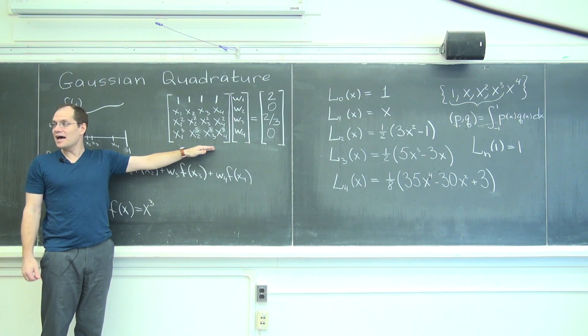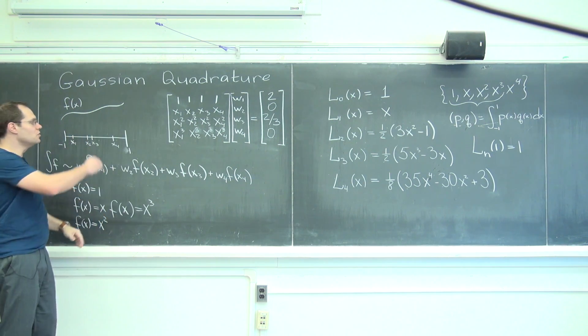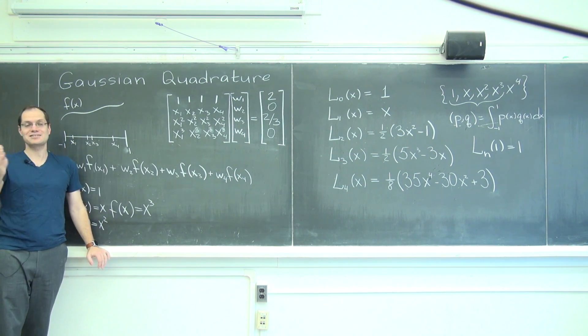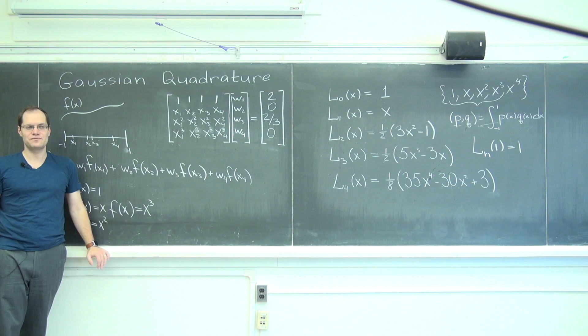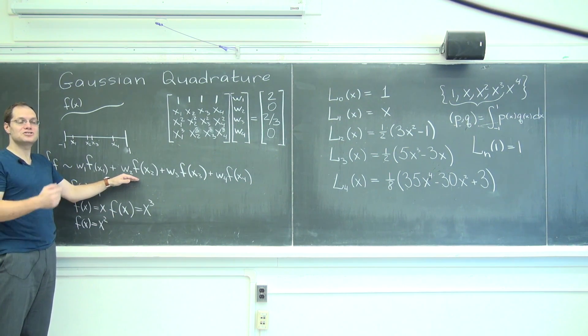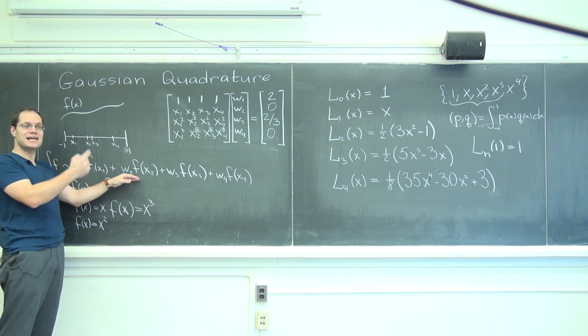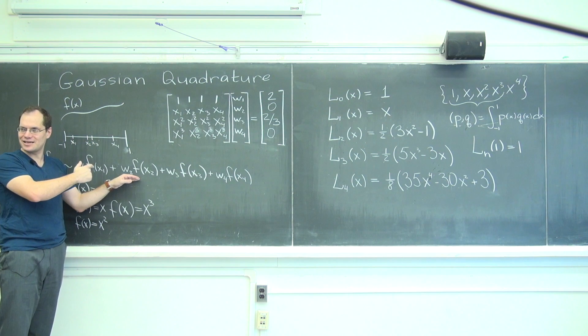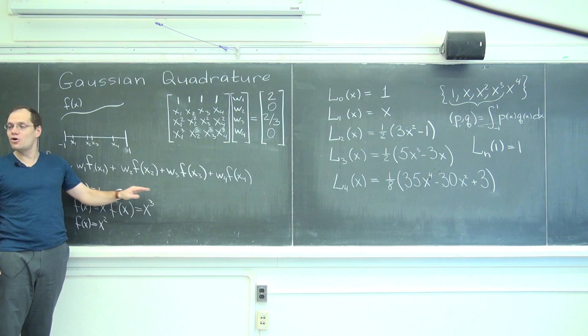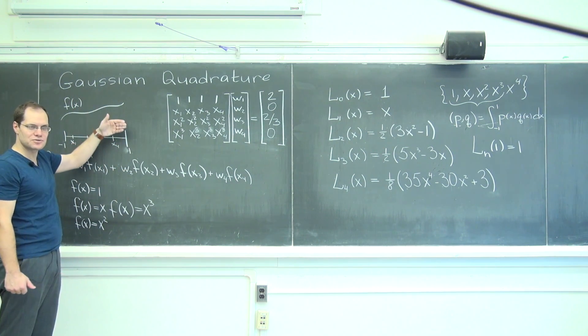Because the trapezoid rule only gets linear functions exactly, and this function gets up to cubic powers exactly. And if you think of a function like this, that's not a cubic, and you fit it with the best possible cubic in some sense that we'll actually talk about in not so distant future, then it will - then this scheme will actually give you the integral of that approximate function, because it integrates that approximate function exactly. I'm speaking a little bit loosely here, but that's the intuition.